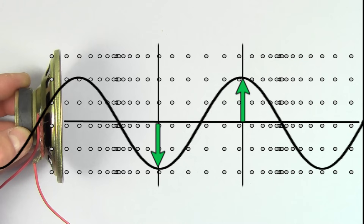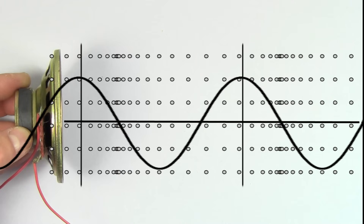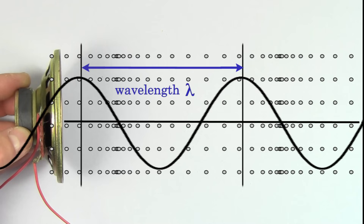This graph shows us that in some regions, the air is displaced a lot from its equilibrium position, and in other regions, the air is not displaced much at all from its equilibrium position. For this kind of graph, the distance between peaks represents the wavelength of the sound wave, not the period.